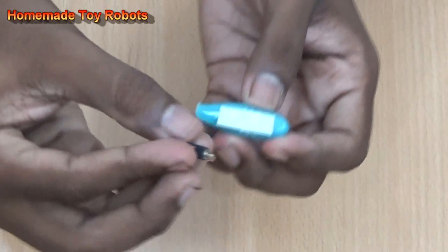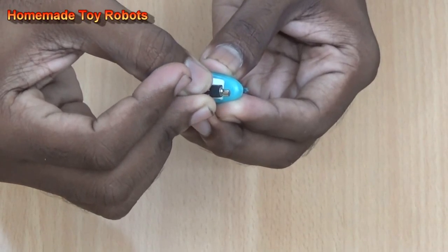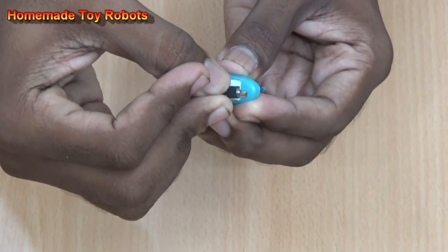Next take the vibrator motor and place it in the corner, any side corner, like this.